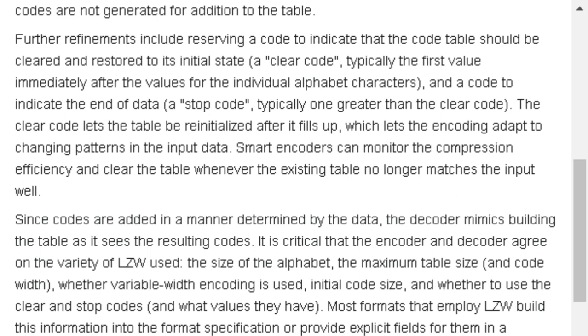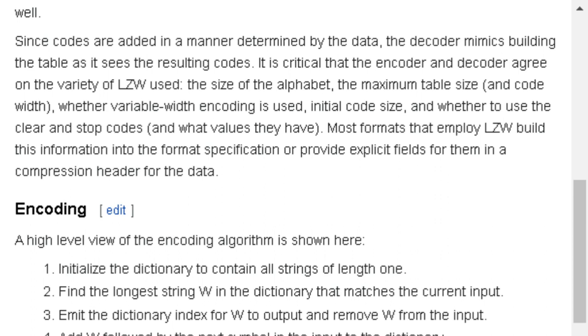Since codes are added in a manner determined by the data, the decoder mimics building the table as it sees the resulting codes. It is critical that the encoder and decoder agree on the variety of LZW use, the size of the alphabet, the maximum table size and code width, whether variable width encoding is used, initial code size, and whether to use the clear and stop codes and what values they have. Most formats that employ LZW build this information into the format specification or provide explicit fields for them in a compression header for the data.